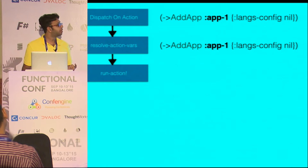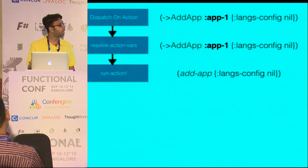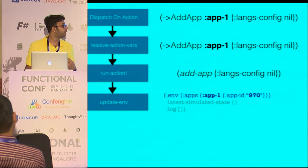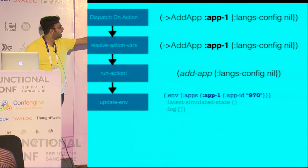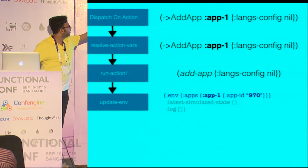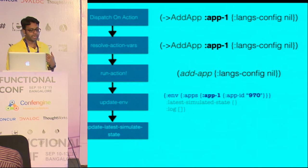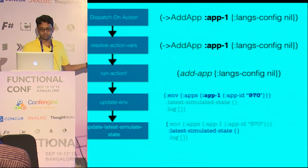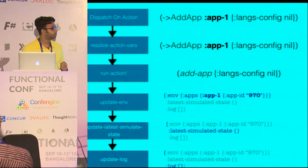Then in run-action, I actually call the actual implementation of adding an app with whatever arguments I need to pass. That will return me an ID, and using that I update the environment. So in the environment I'm adding apps, app 1, and that ID is 970 — which I got from run-action, a side effect that happened. Then I'd like to update the latest simulated state. In my test I care about FAQs, not apps, so I just don't say anything about it. Similarly for update-log, I don't care, I just return as it is.